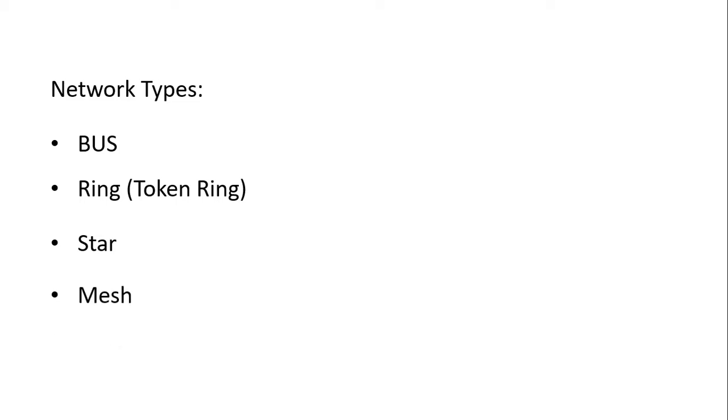We can connect computers in different ways. The main network types are: bus network, token ring network, star network, and mesh network. These are the main network topologies used to connect computers and peripheral devices together. We will go through each network type to understand what each one means and how it works.